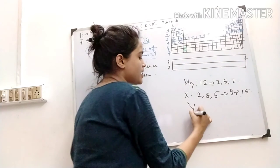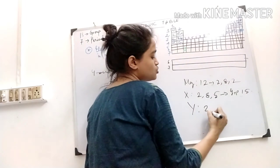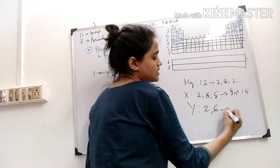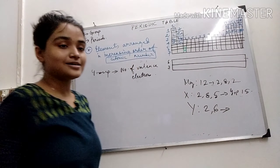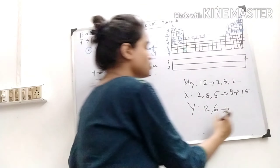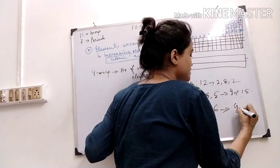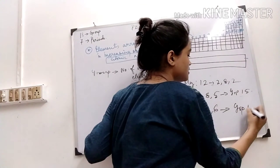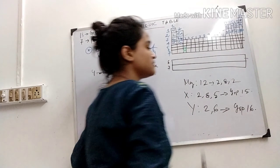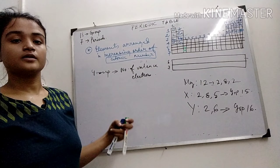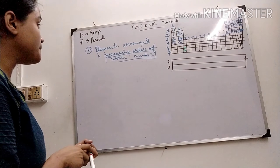Any element — why? It has 2, 6. That means it is group 16.